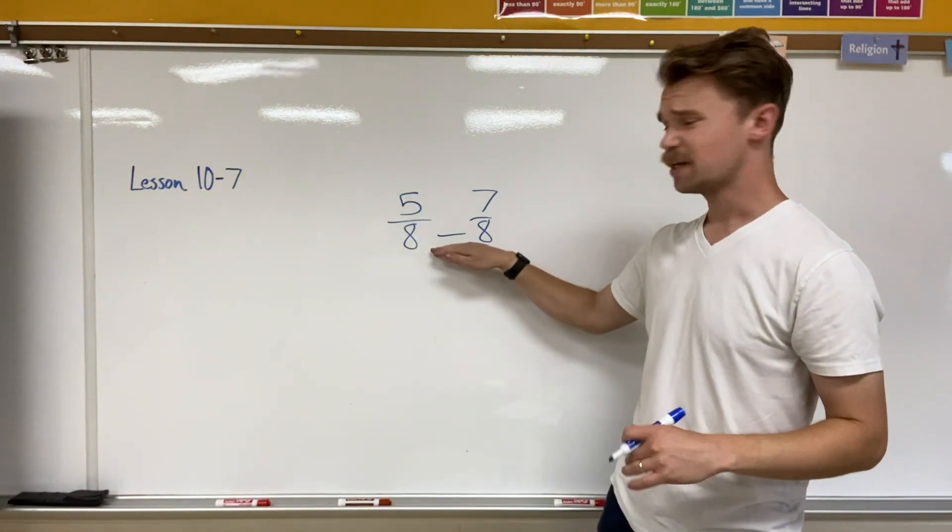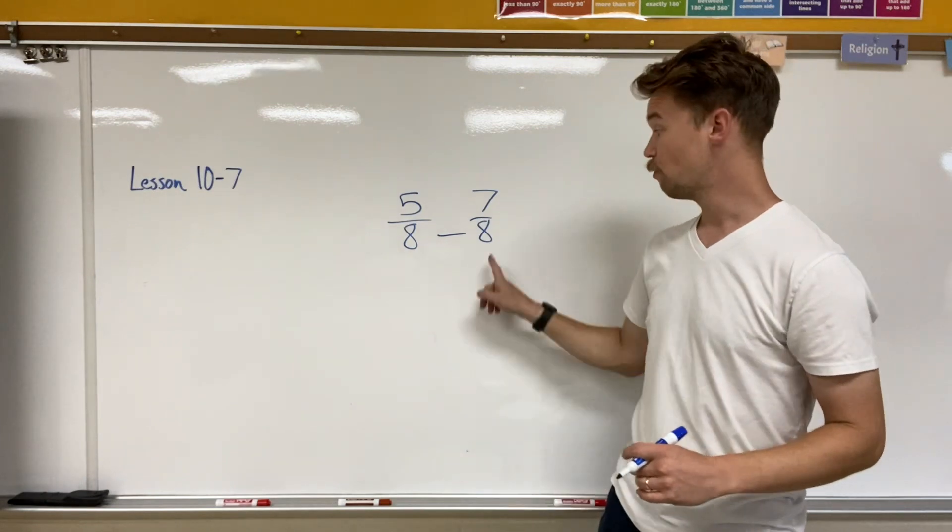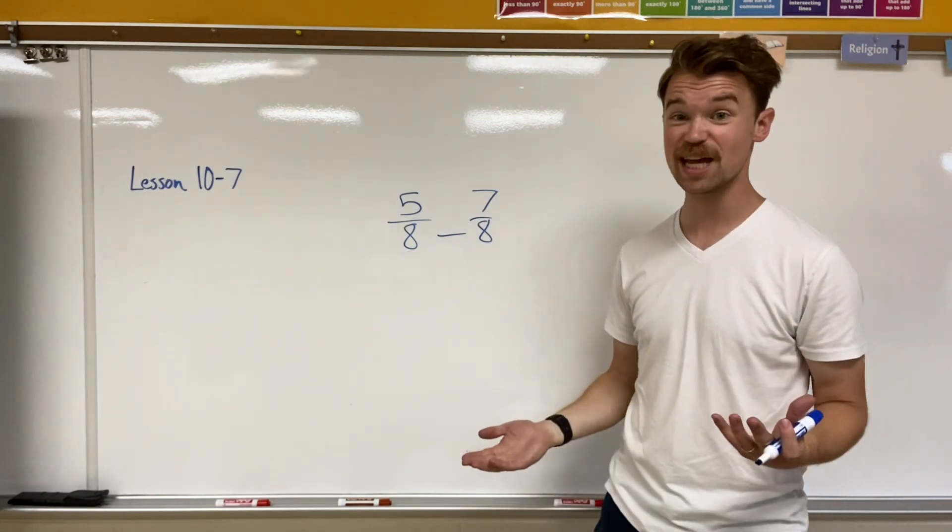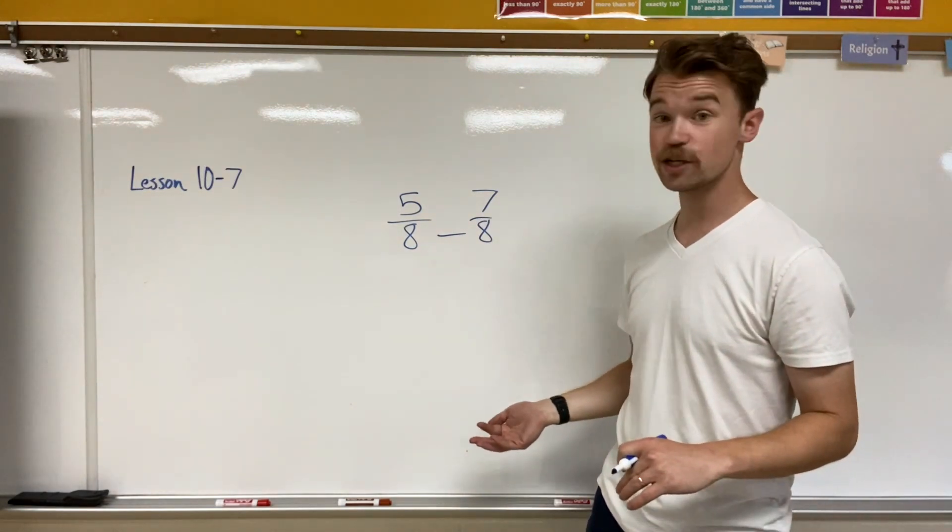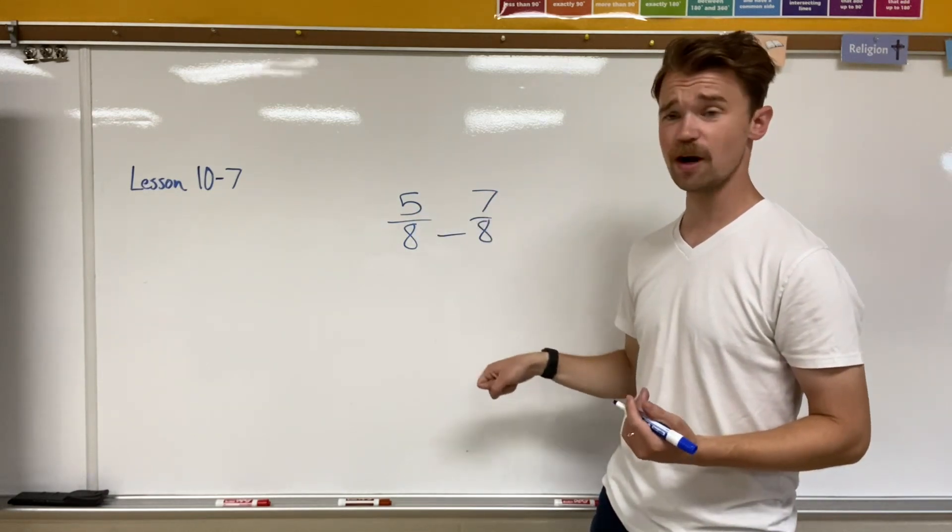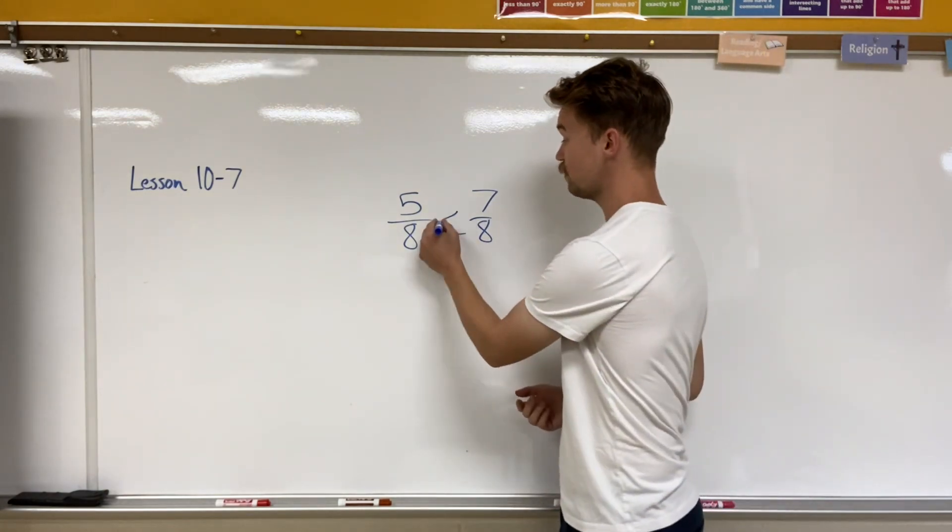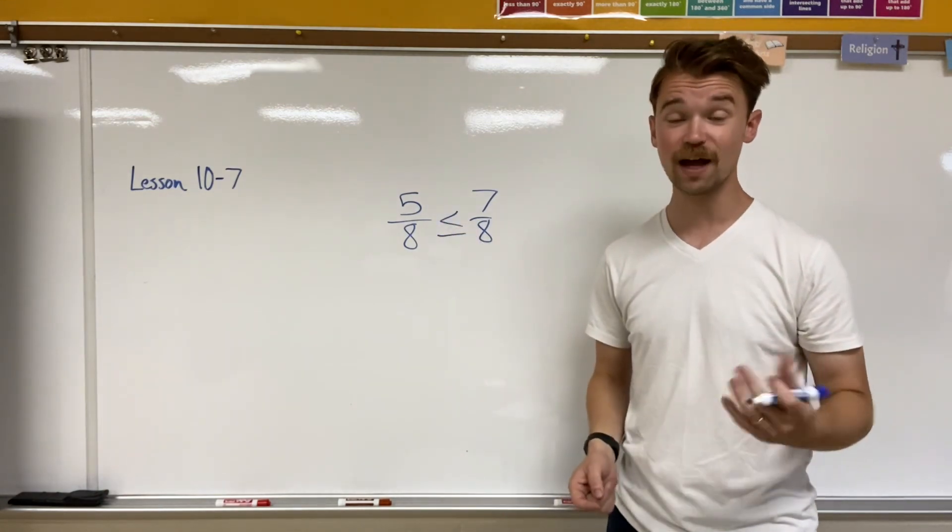I have five-eighths could be greater than, less than, or equal to seven-eighths. Well, I see that both my denominators are the same. They're both eighths. So I just compare the numerators. I have five-eighths and seven-eighths. Which one's larger, five or seven? Seven's larger. So seven-eighths is larger than five-eighths.